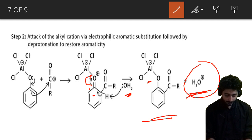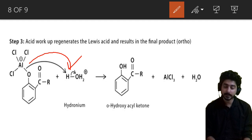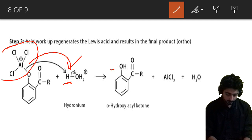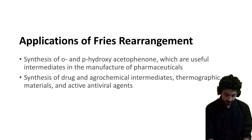In the last step, the departing group attacks the H3O⁺ and picks up a proton, converting to an OH (hydroxyl) group. AlCl3 is released, and water is removed. This completes the mechanism of the Fries rearrangement.